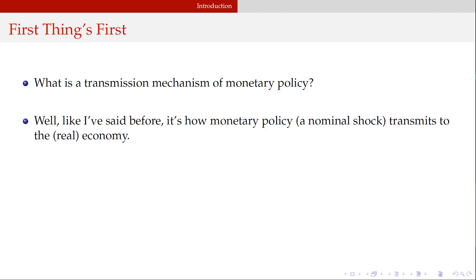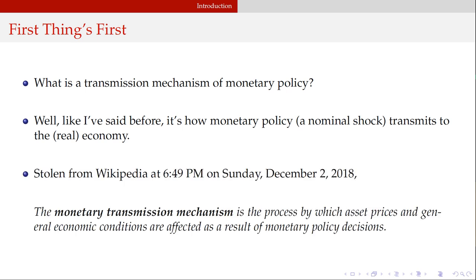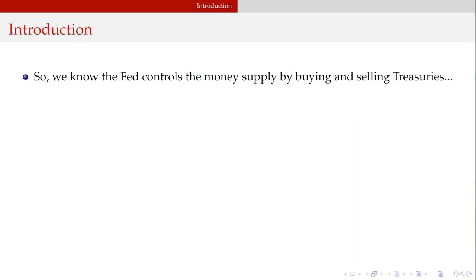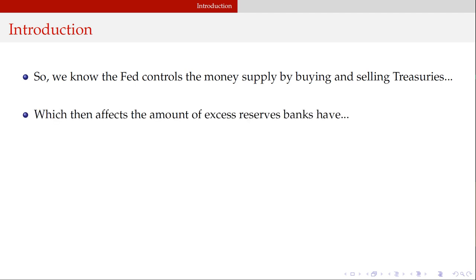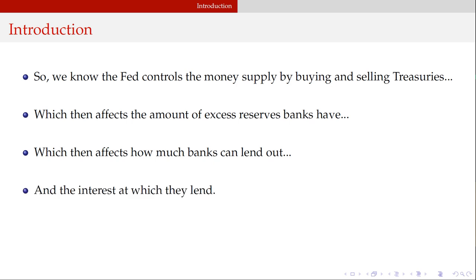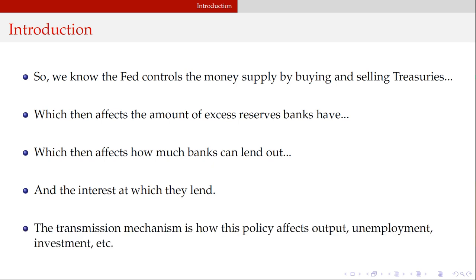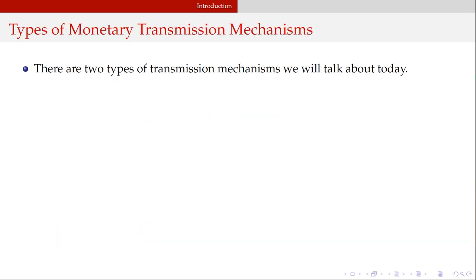First things first: what's a transmission mechanism of monetary policy? It's just how a monetary policy shock transmits to the real economy. The Wikipedia definition states the monetary transmission mechanism is the process by which asset prices and general economic conditions are affected as a result of monetary policy decisions. The Fed controls the money supply by buying and selling treasuries, which affects excess reserves banks have and how much they can lend out, which affects the interest rate.